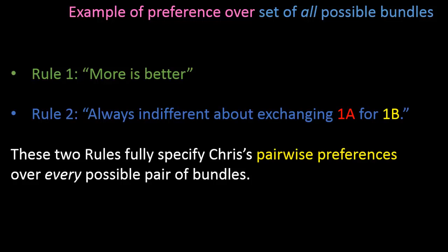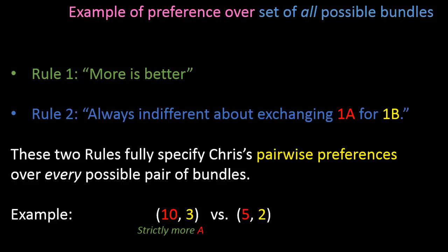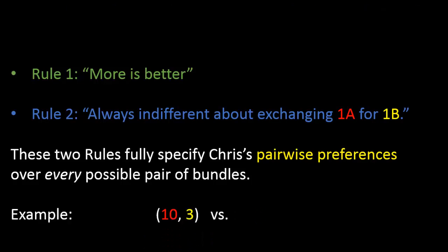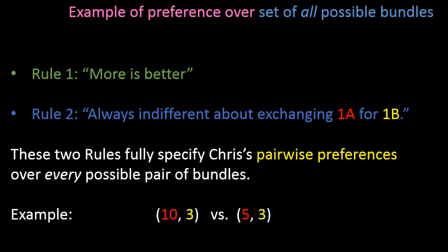Let's look at a few examples of pairs of bundles. First, compare the bundle 10 apples and 3 bananas to the bundle 5 apples and 2 bananas. The first bundle has strictly more apples and strictly more bananas than the second bundle, so by rule 1, the first bundle is strictly preferred to the second. For the second example, compare 10 apples and 3 bananas to 5 apples and 3 bananas. The first bundle has just as many bananas but strictly more apples, so again by rule 1 — more is better — the first bundle is strictly preferred to the second.